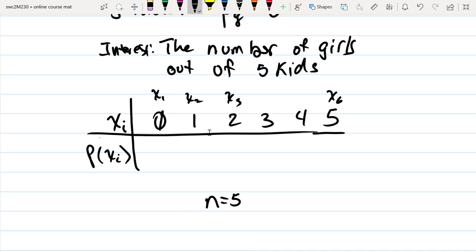The probability of a girl is 0.52, and we're interested in the probability of having exactly two girls.